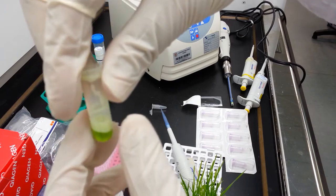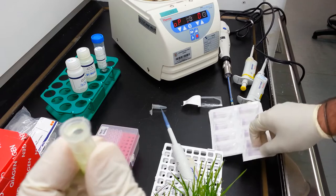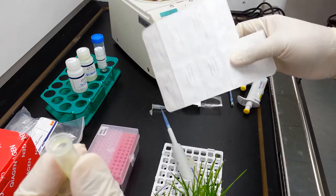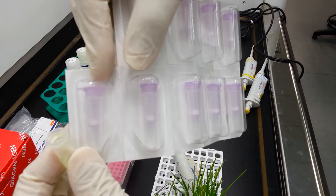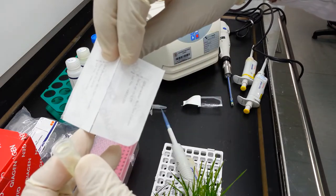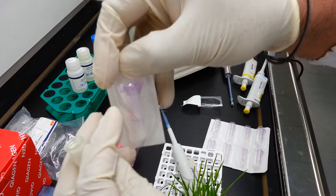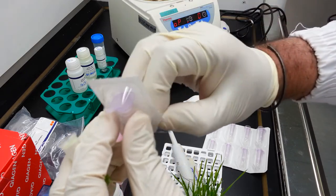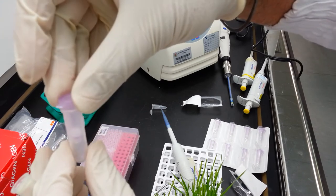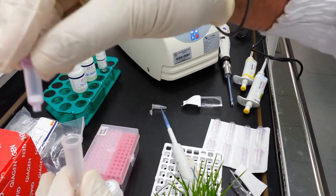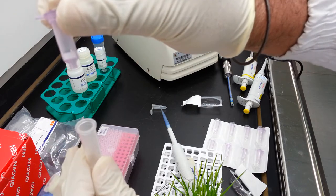This now represents the lysate which contains all the nucleic acids including the DNA and RNA. Now the RNAeasy plant kit comes with this column which is purple in color and this is termed as the Kaya shredder column. The column consists of two sections.